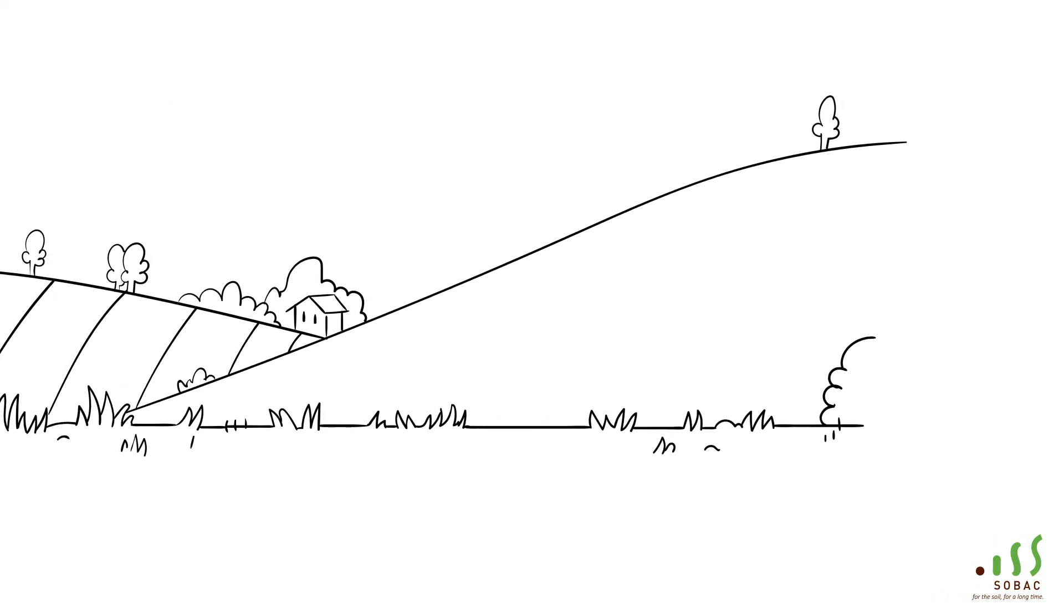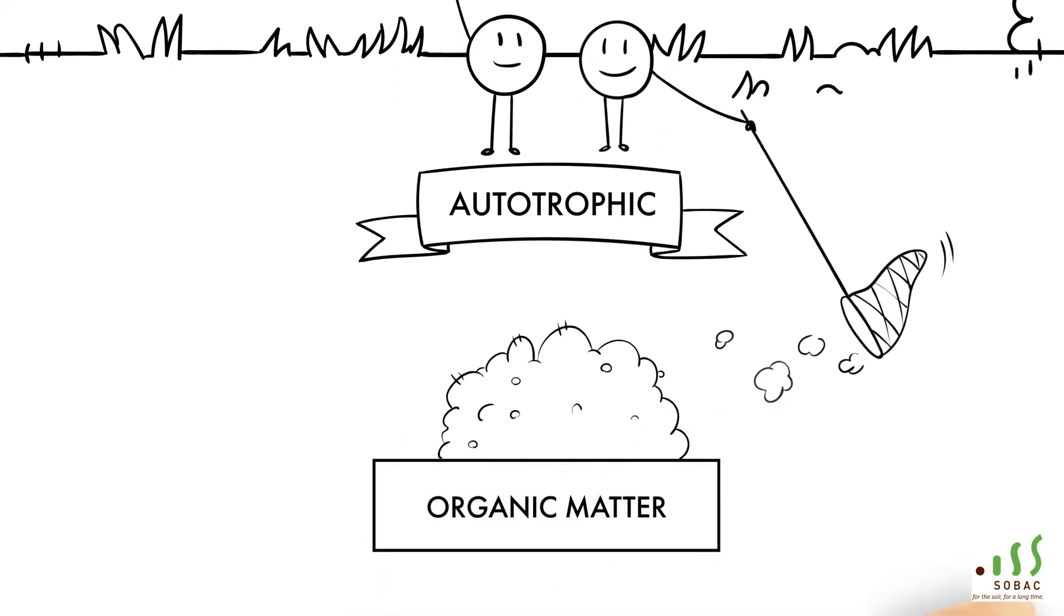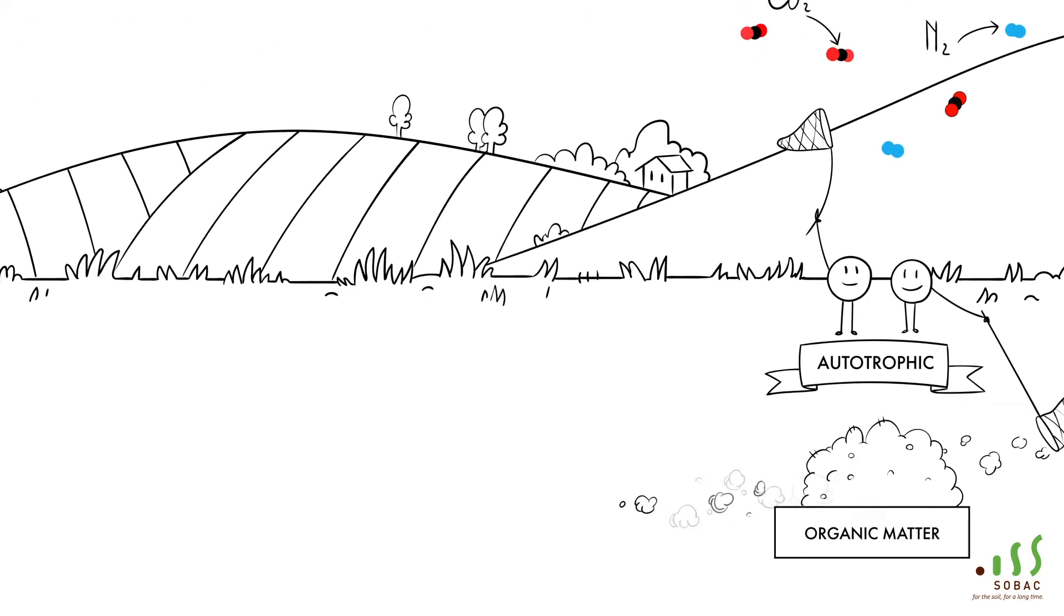The autotrophic microorganisms fix the atmospheric elements, mainly carbon and nitrogen, in the form of organic matter, which will become nutrients for the plant.